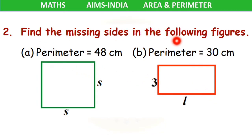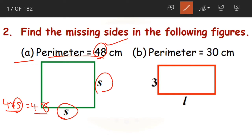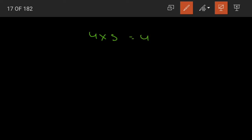Now coming to question 2: find the missing sides in the following figures. They are asking us to find out the missing sides. If you look at question A, the perimeter is already given and the figure is a square. The formula for perimeter of a square is 4 into S. We already have the value of 4 into S — it is 48. We need to find out the value of S.